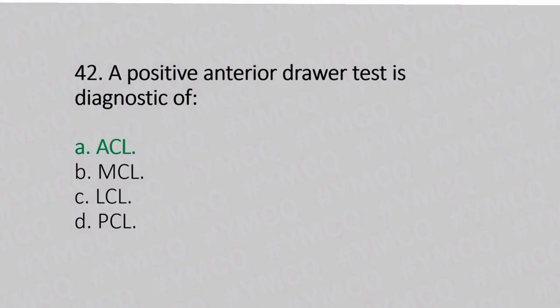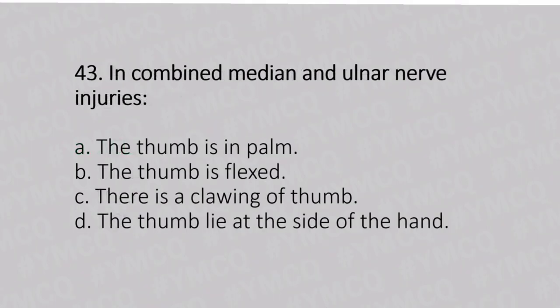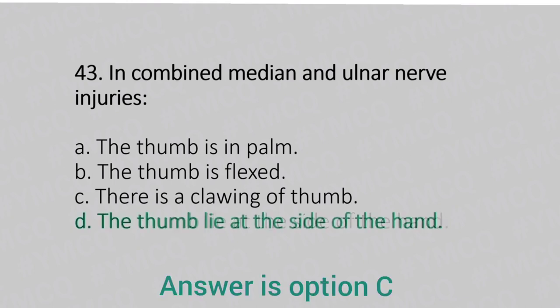Now let's move to question number 43. In combined median and ulnar nerve injury. Option A: the thumb is in the palm. Option B: the thumb is flexed. Option C: there is clawing of the thumb. Option D: the thumb lies at the side of the hand. And the answer is Option D, the thumb lies at the side of the hand.